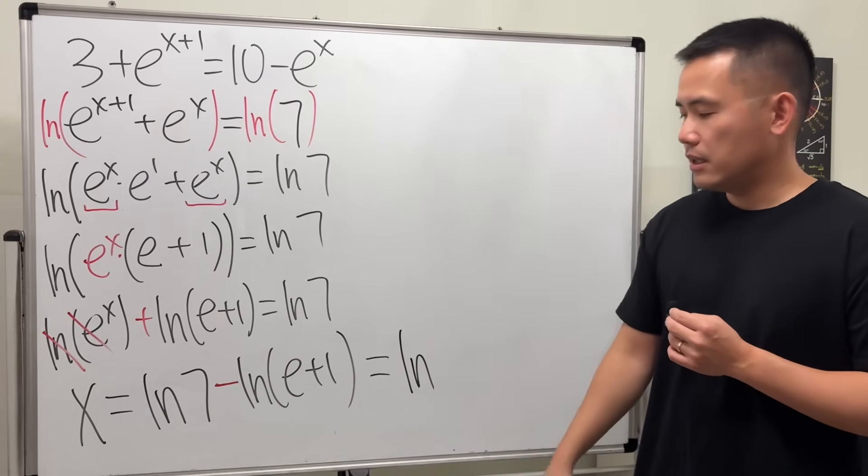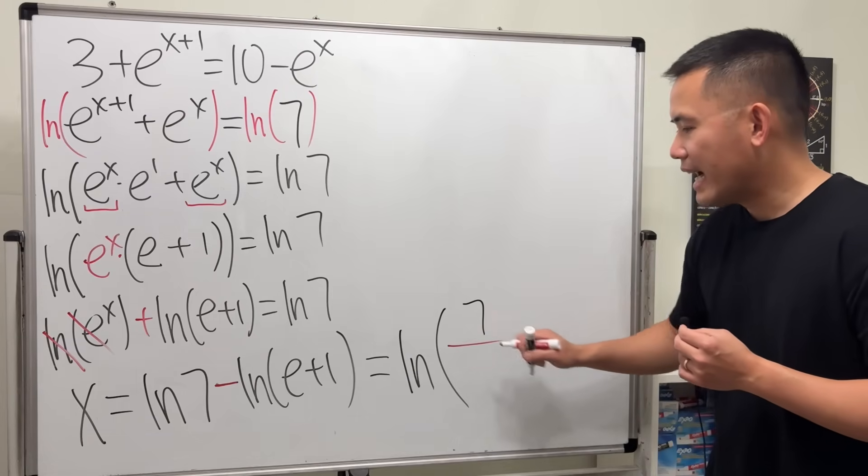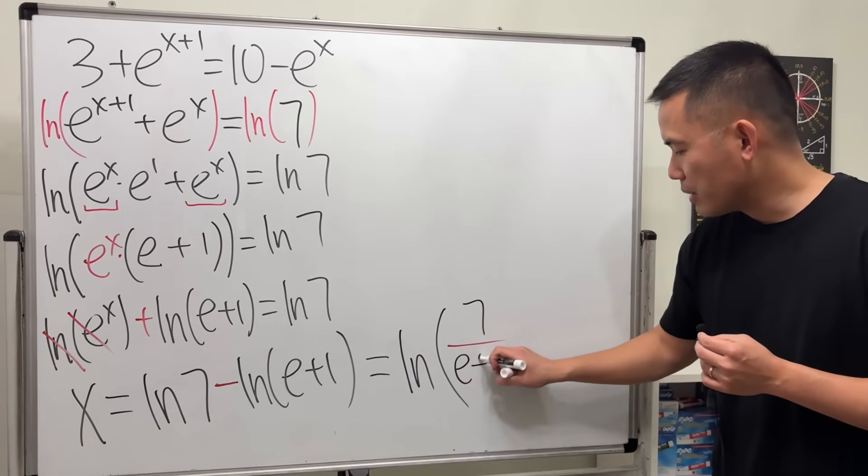you can also use the log property to put them together. This right here is the same as just one single ln, and then the first thing inside on the top divided by the second thing, which is (e + 1) on the bottom.